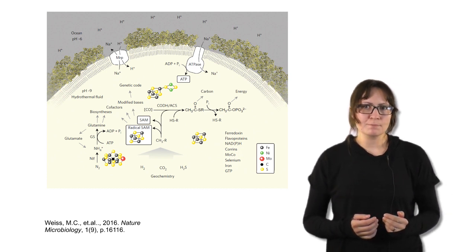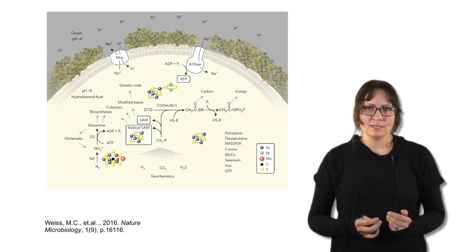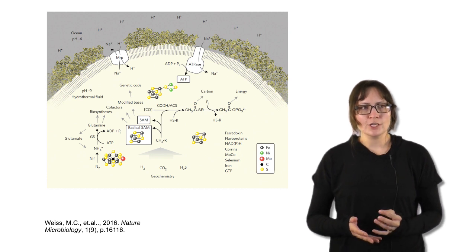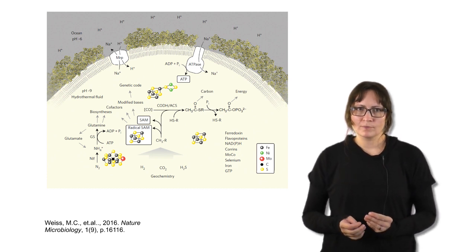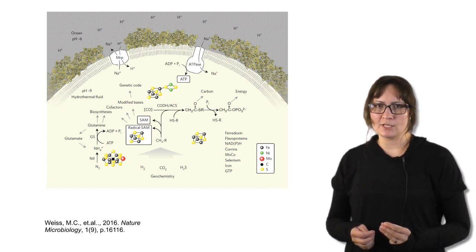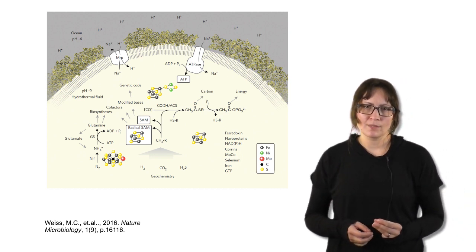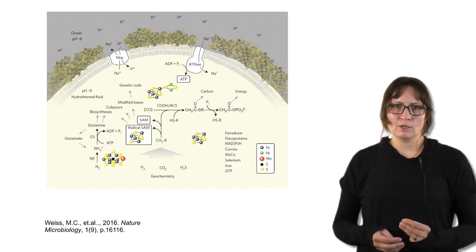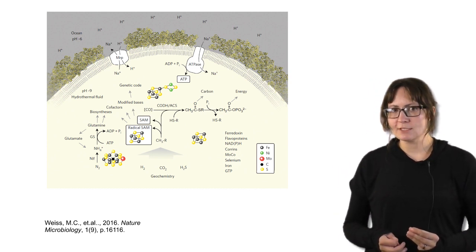The environment in which this particular LUCA model is placed is somewhere in or near a hydrothermal vent. In the lower right corner you can see the list of components likely present in this earliest LUCA metabolism. Proteins and cofactors for the earliest metabolism, all also found in modern cells.